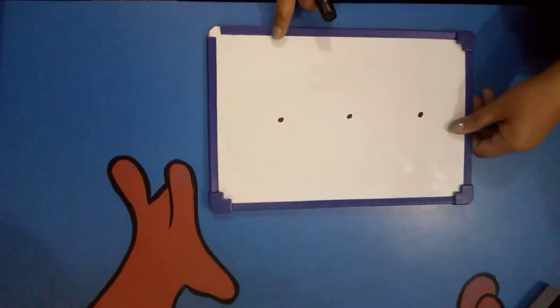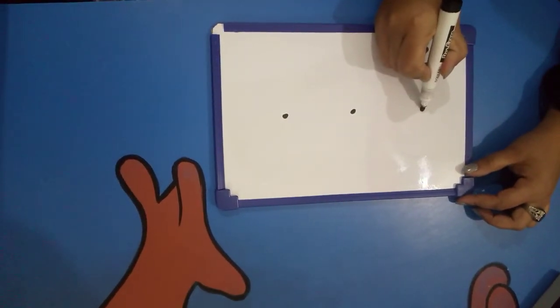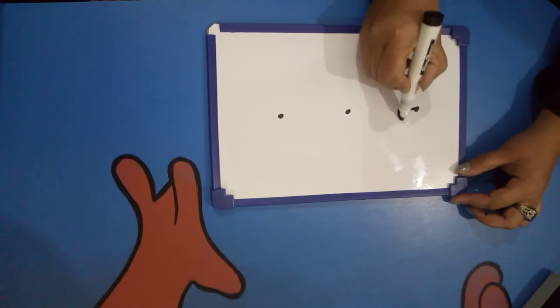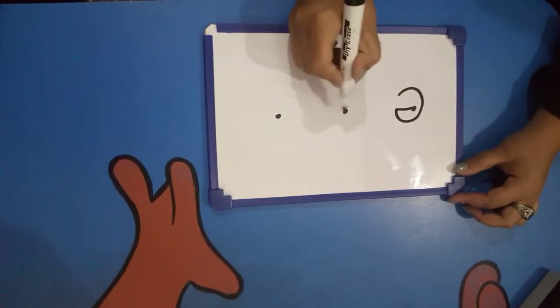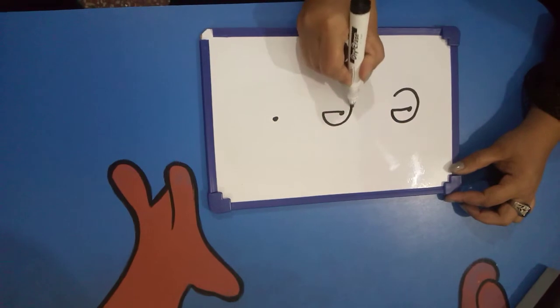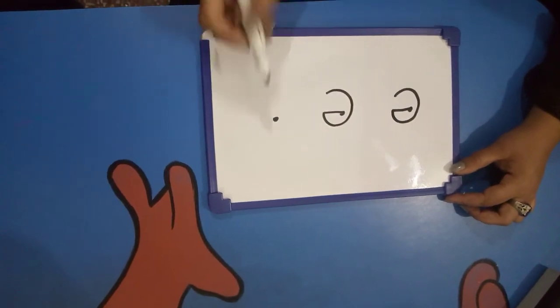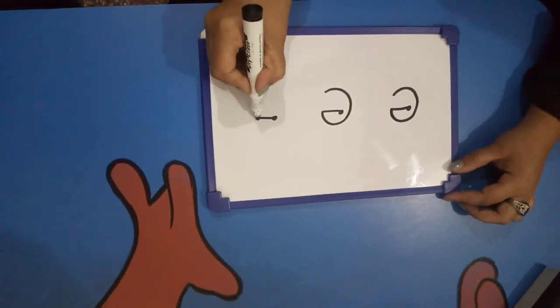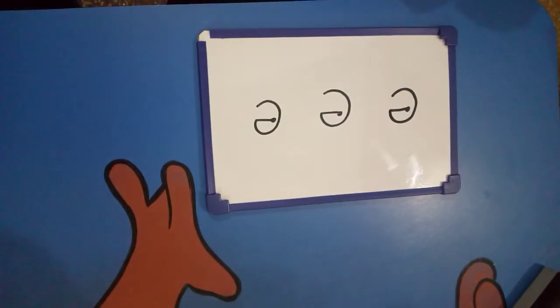Okay, now write it on the board. Start from the start. Make a sleeping line and make a kh. E, a elephant. Now write it again. Make a sleeping line and make a kh. E, a elephant. Make a sleeping line and make a kh. E, a elephant.